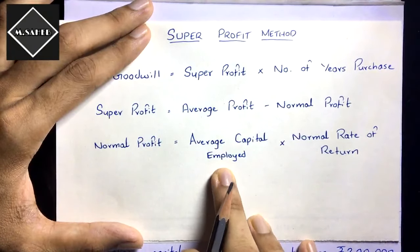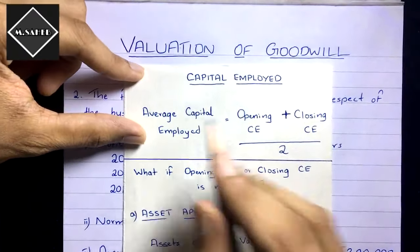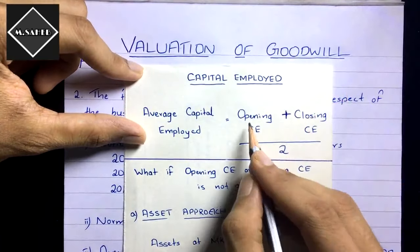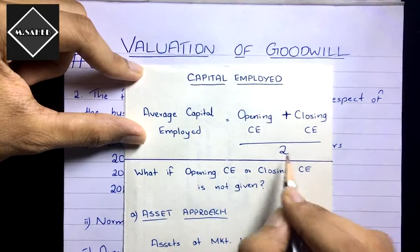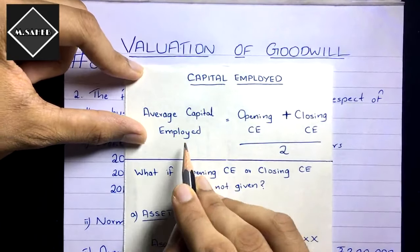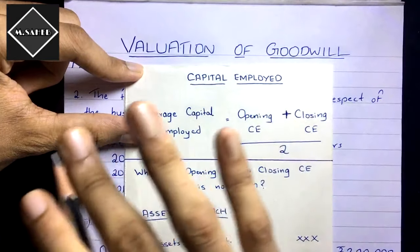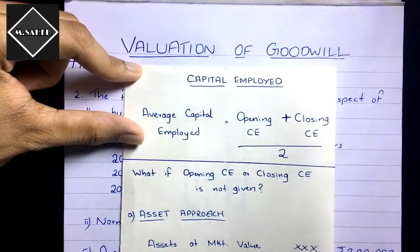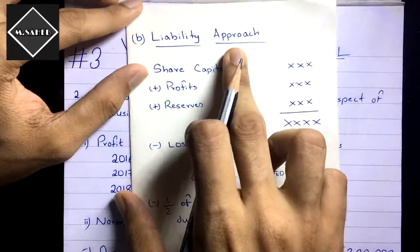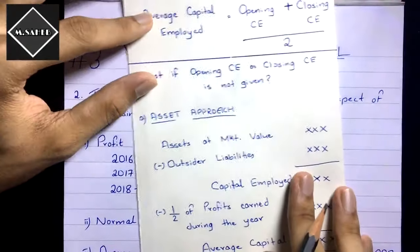To calculate average capital employed, the first formula is: Average Capital Employed = (Opening Capital Employed + Closing Capital Employed) ÷ 2. But if opening or closing capital employed is not given in the question, you have two other approaches: the asset approach or the liability approach.